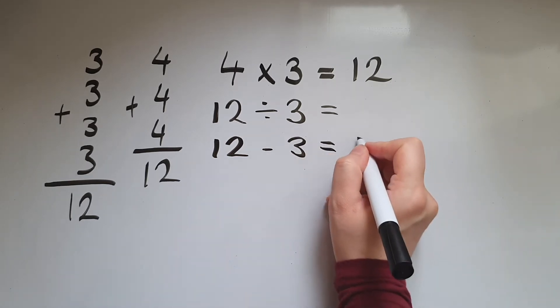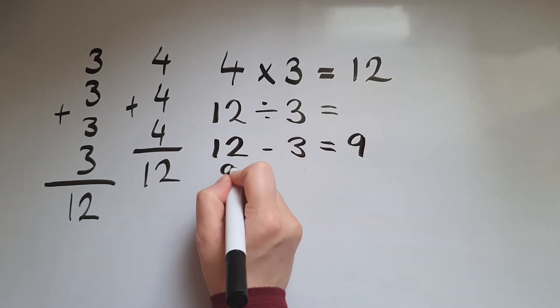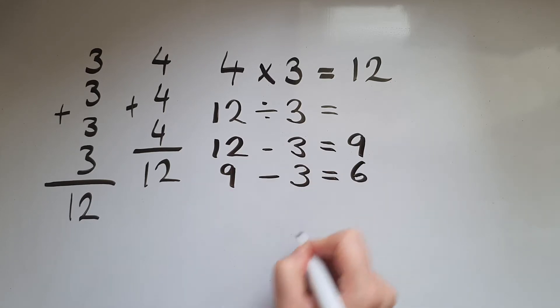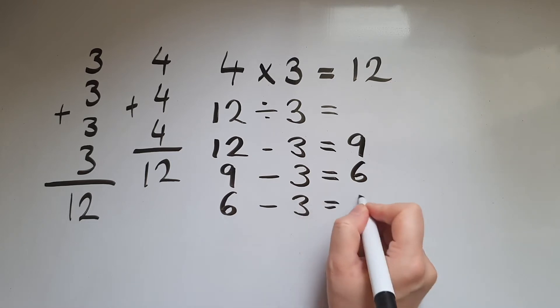And that leaves us with 9. So 9 then take away 3 gives us 6, 6 take away 3 gives us 3, 3 take away 3 gives us 0.